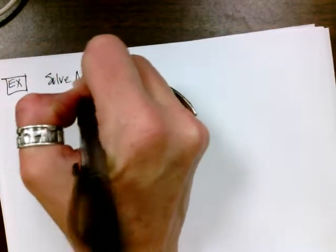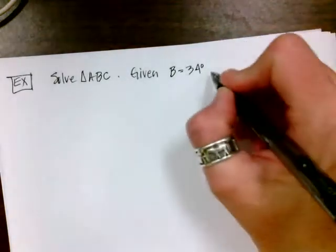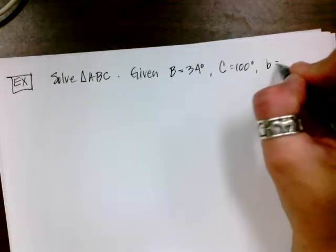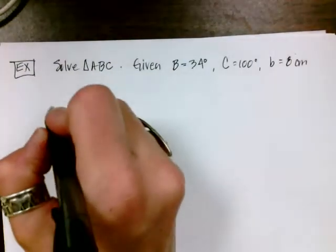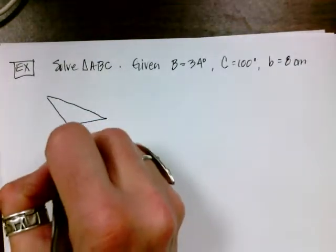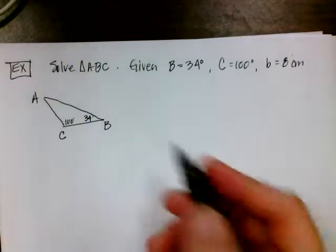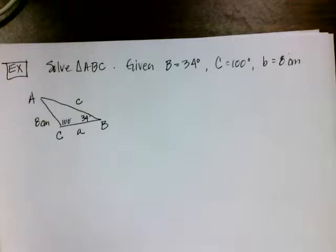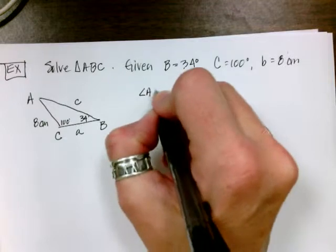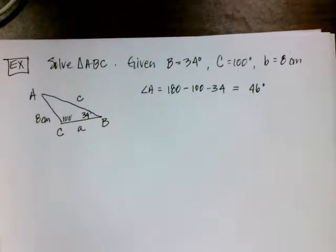Next example: solve the triangle ABC. You're given that angle B is 34 degrees, angle C is 100 degrees, and little b is 8 centimeters. I'm drawing an obtuse triangle. Here's C at 100 degrees, B at 34 degrees. I can find A pretty easily. Side b is 8 centimeters; I don't know little a or little c. Angle A equals 180 minus 100 minus 34, so angle A is 46 degrees. I'll add that to my diagram and circle things I've added so I don't get confused about what's given versus found.